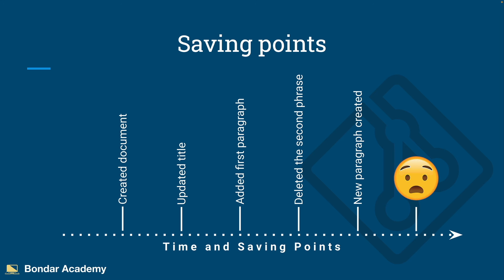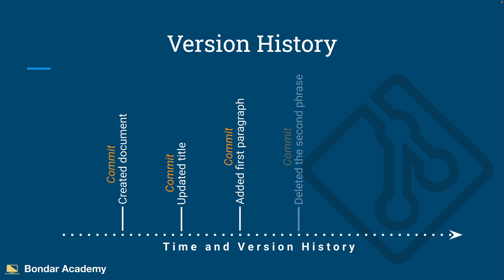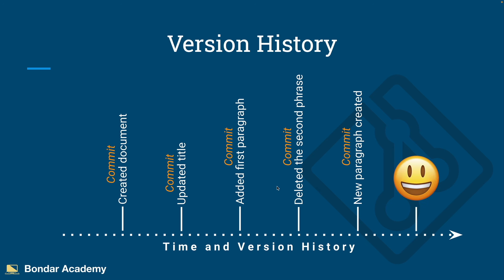But not if you use a version control system like Git. This is how it would look using Git. You created the document and created a commit. A commit in Git is the saving point — or snapshot — of the current version of the document you are working with. You made an update to the title and committed again, added the first paragraph and committed, deleted the second phrase and committed, then created a new paragraph and committed. Later, working on the third paragraph, you can simply go back in time to the commit where you added the first paragraph, which contained the deleted second phrase, and recover that information from your past commit.